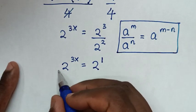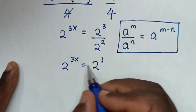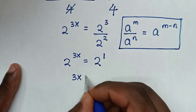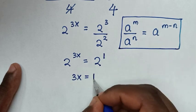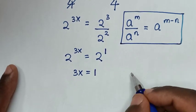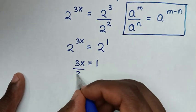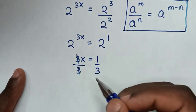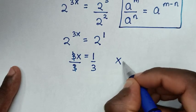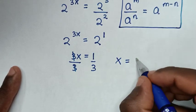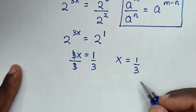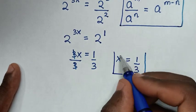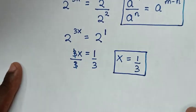Now we have the same base of 2 on both sides, so we compare the powers. It gives us 3x equals 1. Dividing by 3 on both sides, 3 cancels, and we get x equals 1 over 3. So this is the final answer for the value of x.